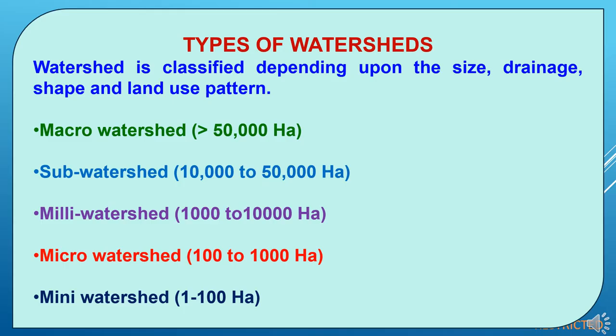There are different types of watershed. Watersheds are classified depending upon size, drainage capacity, and land use pattern. First is the macro watershed, having a catchment area of more than 50,000 hectares. Then sub-watershed, having a catchment area of 10,000 to 50,000 hectares. Then milli watershed, having a catchment area of 1,000 to 10,000 hectares. Then micro watershed, having a catchment area of 100 to 1,000 hectares. And mini watershed, having a catchment area of less than 100 hectares.